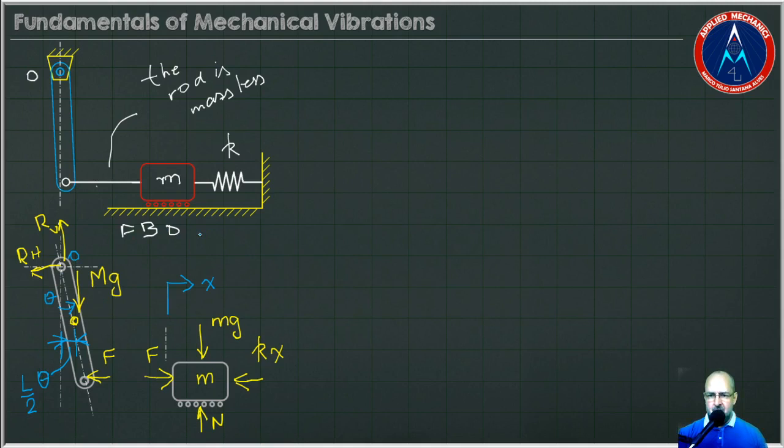Another important information: theta must be less than five degrees to allow linearize all the trigonometric functions in this problem. Theta less or equal than five degrees. In this case, we have all the information we need to go on in the exercise.